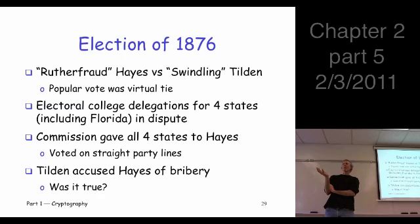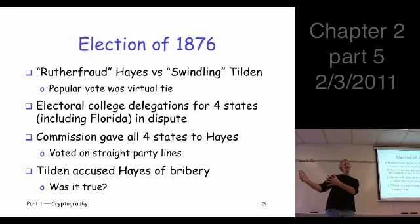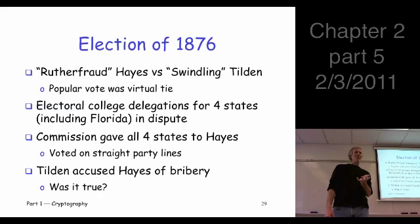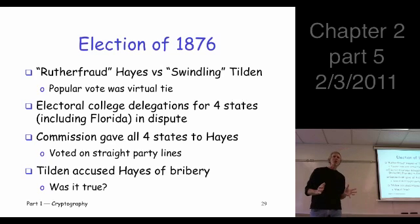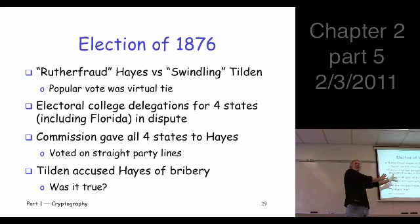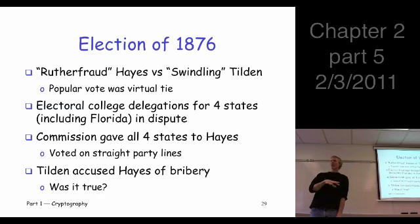In the U.S., the president is not determined by the popular vote — it's determined by the Electoral College. The way that's supposed to work, at least in most states, is that whoever gets the majority or plurality of the vote in that state gets all of their delegates to the Electoral College. So essentially it's winner-take-all per state. In 1876, there were four states whose delegates were in dispute — and I'm not making this up — one of those four states was Florida. Whoever got those four states' votes was going to win the election.